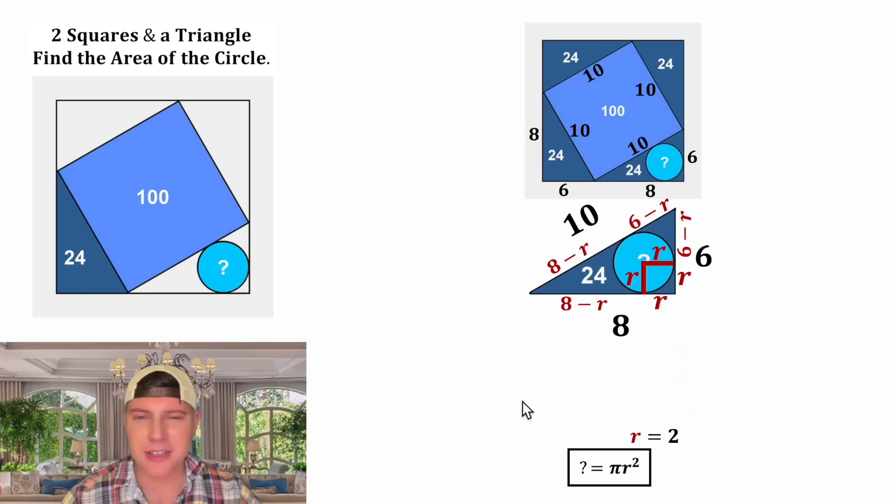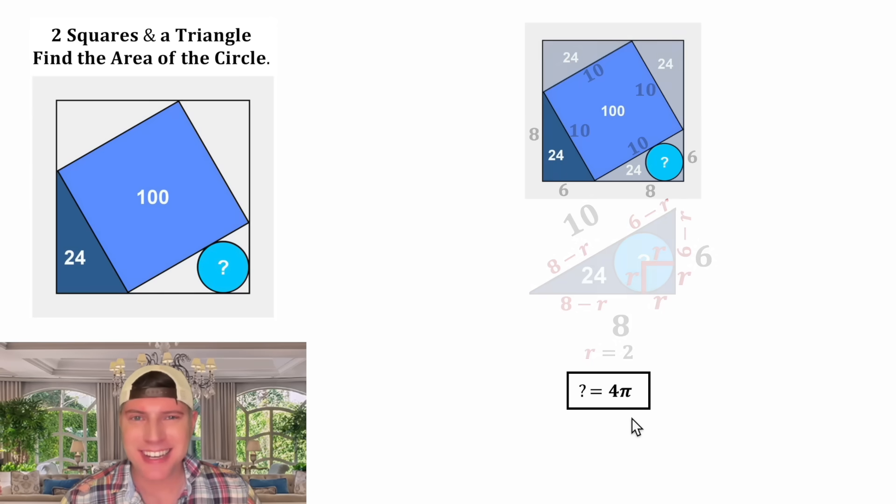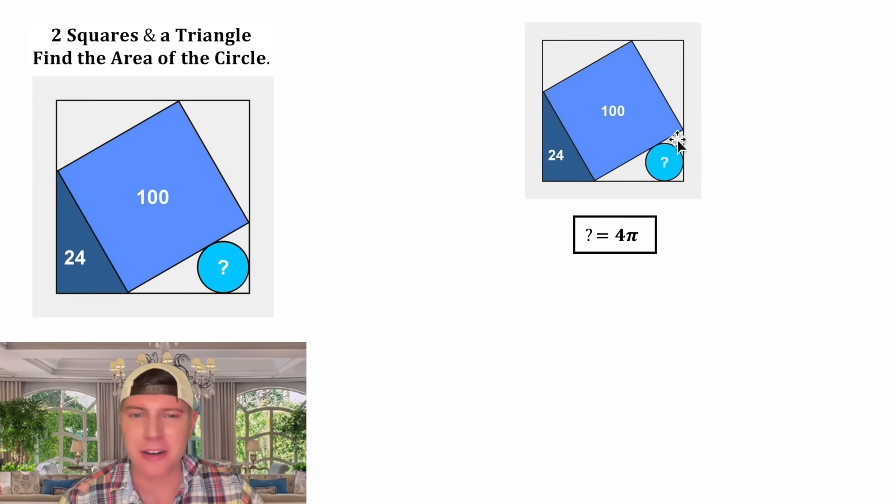And now we have the radius of our circle. For the pi r squared, in the place of the r let's plug in 2. 2 squared is equal to 4, so we end up with question mark is equal to 4 pi. And that is the answer to our question. In this given diagram, the area of the circle is 4 pi, and that's approximately equal to 12.566. How exciting.